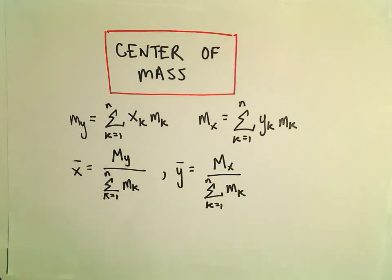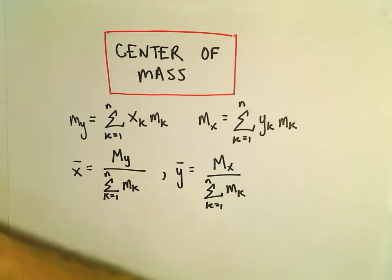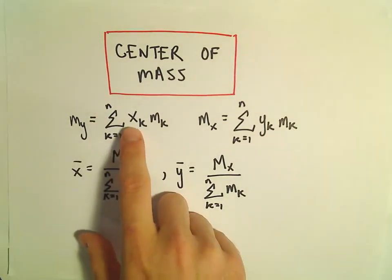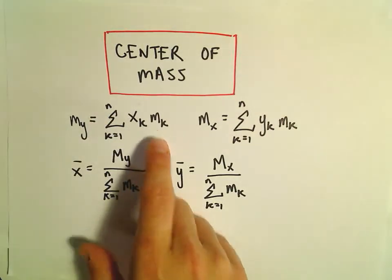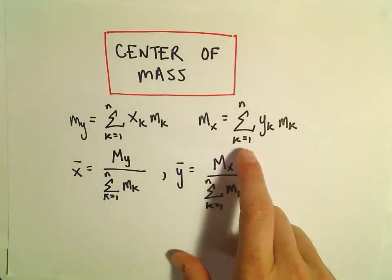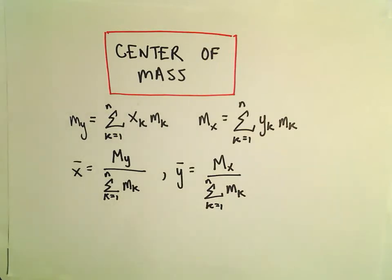In this video we're going to look at centers of mass. We've got the moment about the y-axis, m sub y, which is the summation from k equals 1 to n of x sub k times m sub k. Our moment about the x-axis is the sum from k equals 1 to n of y sub k times m sub k.